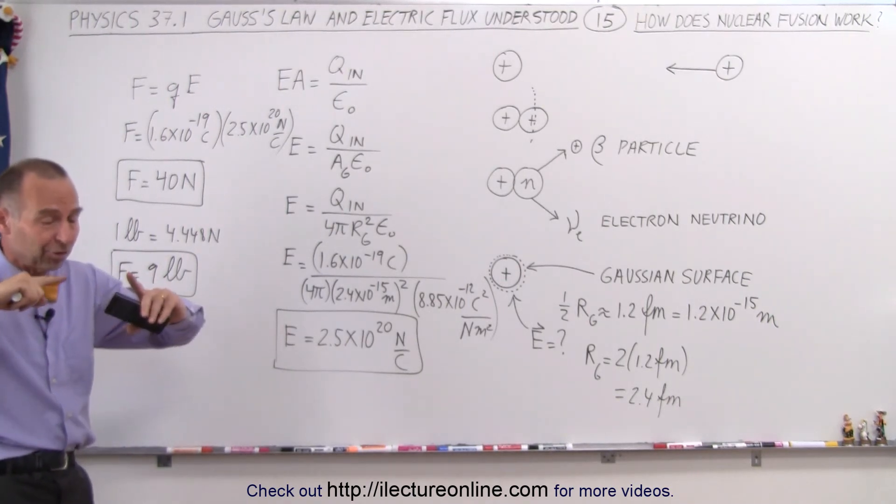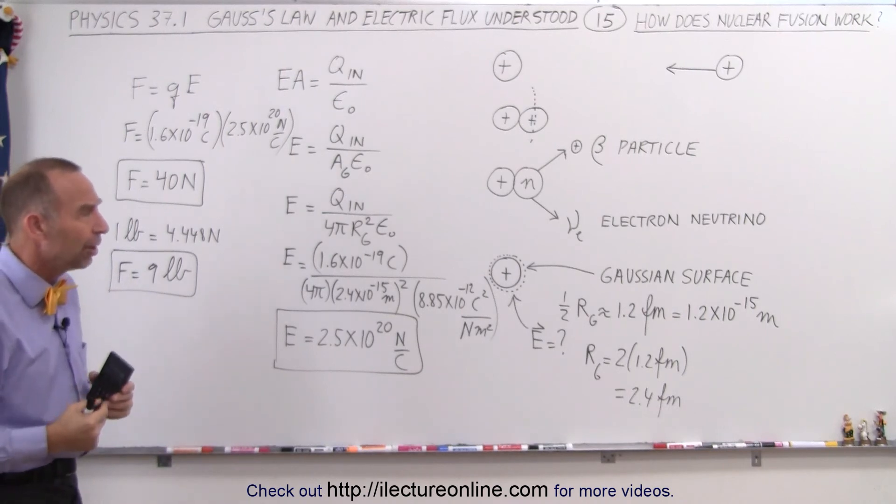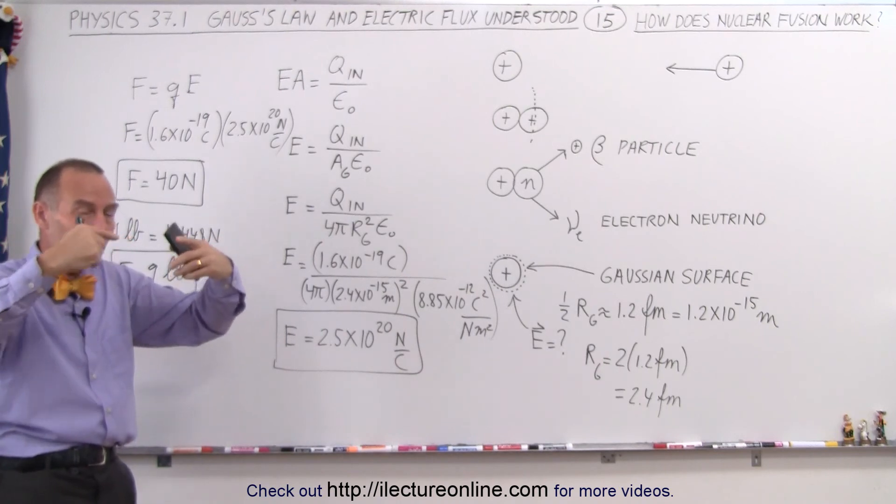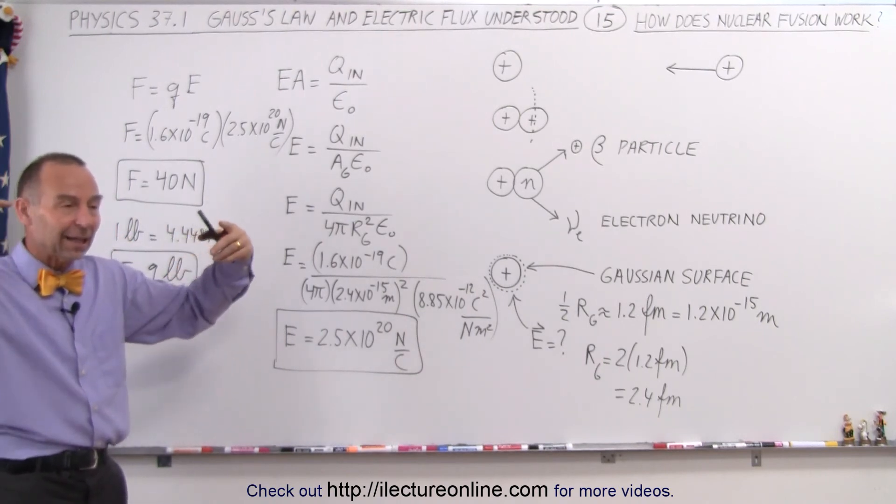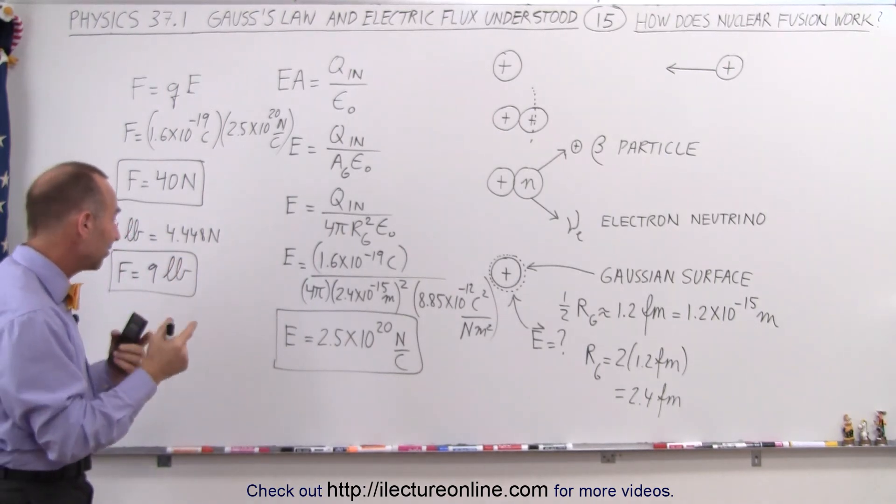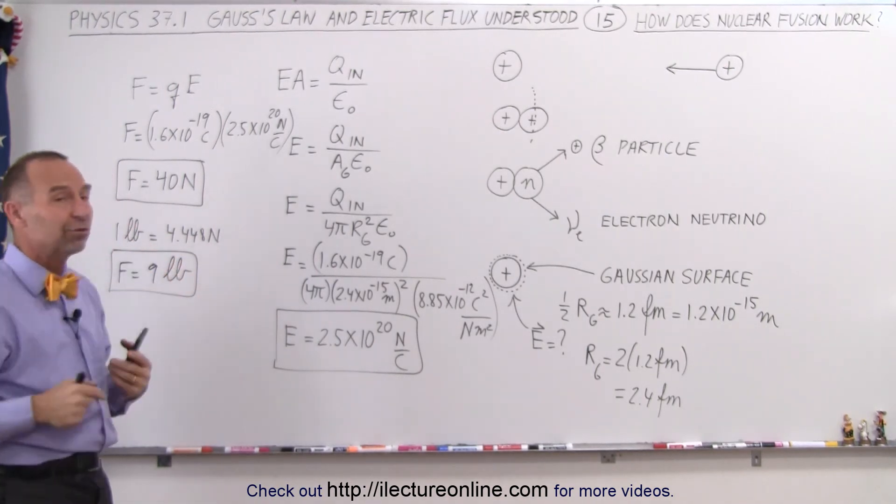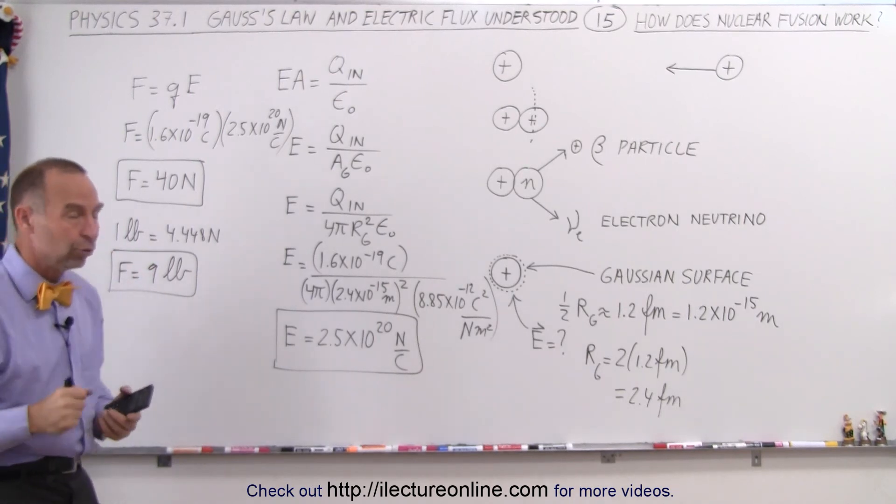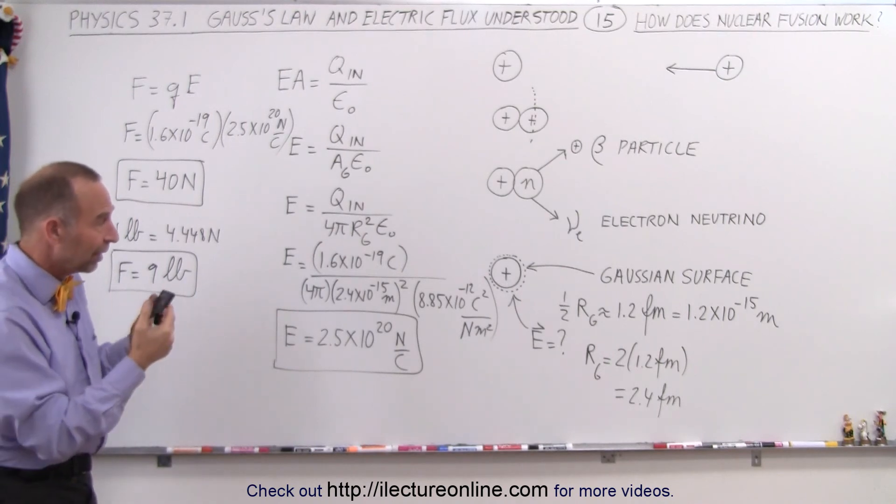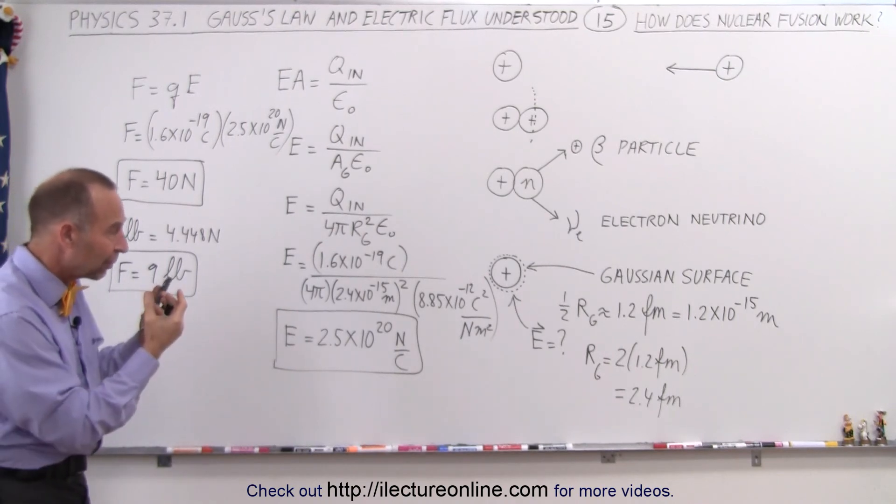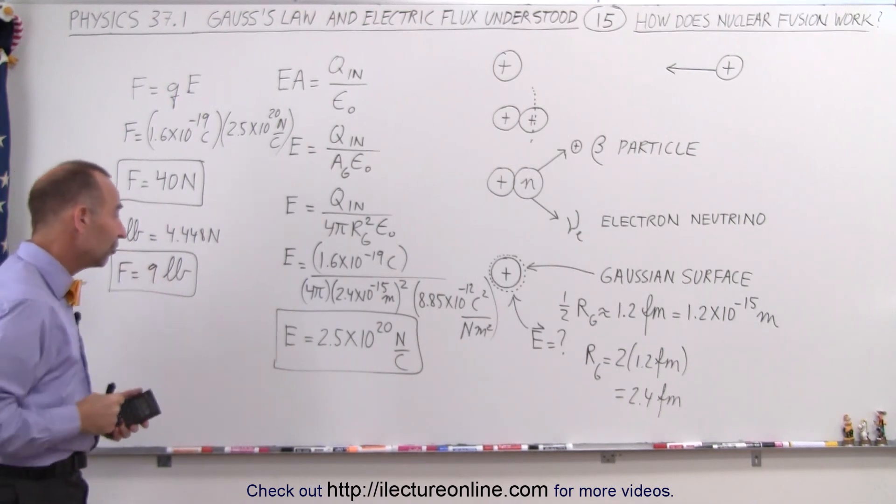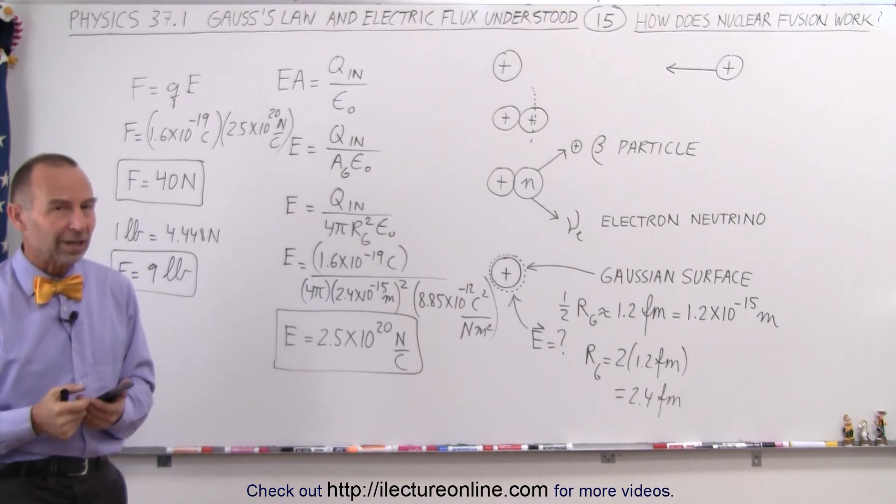Now, of course, nobody sits there and pushes two protons together like that. That would be impossible, but that's accomplished by having the two protons move fast enough towards one another with such an enormous velocity that before they can get repelled, they get close enough for the nuclear strong force to take over. But basically, they need to overcome this enormous force for them to be able to fuse into a deuteron. So now you have it. By using the concept of the Gaussian surface and Coulomb's law and the concept of electric fields and the forces created by those electric fields, now we realize how much force is involved in combining and fusing two protons together.